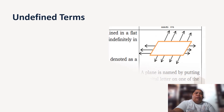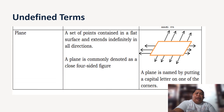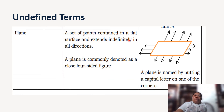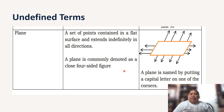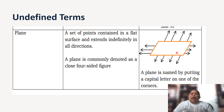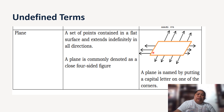Another example of an undefined term is the plane. A plane is a set of points contained in a flat surface and extends indefinitely in all directions. A plane is commonly denoted as a closed four-sided figure, with points labeled on it.